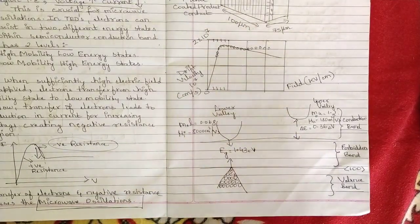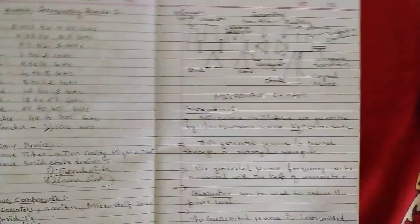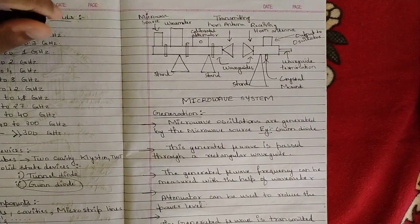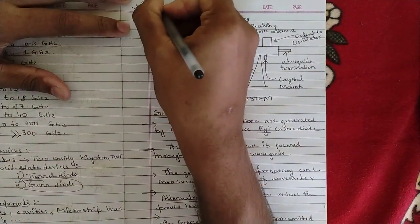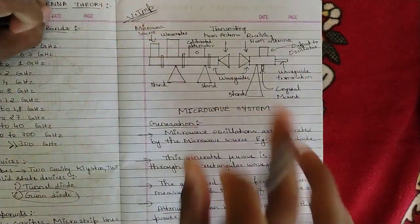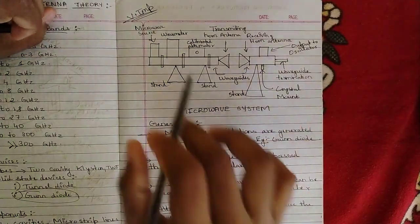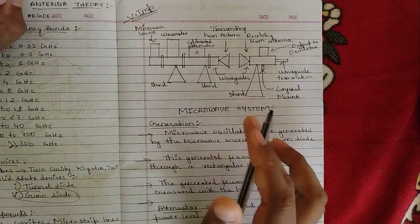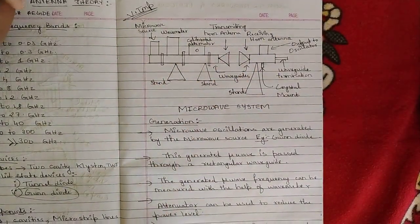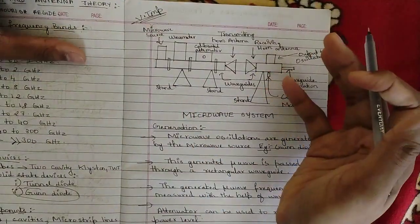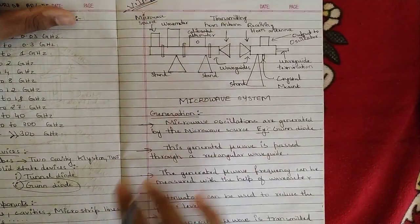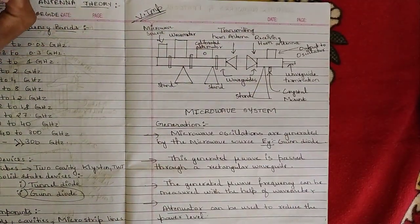Please brush up all these concepts thoroughly. The microwave system is a sure question from this module and is very important for the final VTU exam, as it is a repeatedly asked topic. You should draw a neat diagram of a microwave system and explain its construction, generation, and reception — this could fetch seven to eight marks.